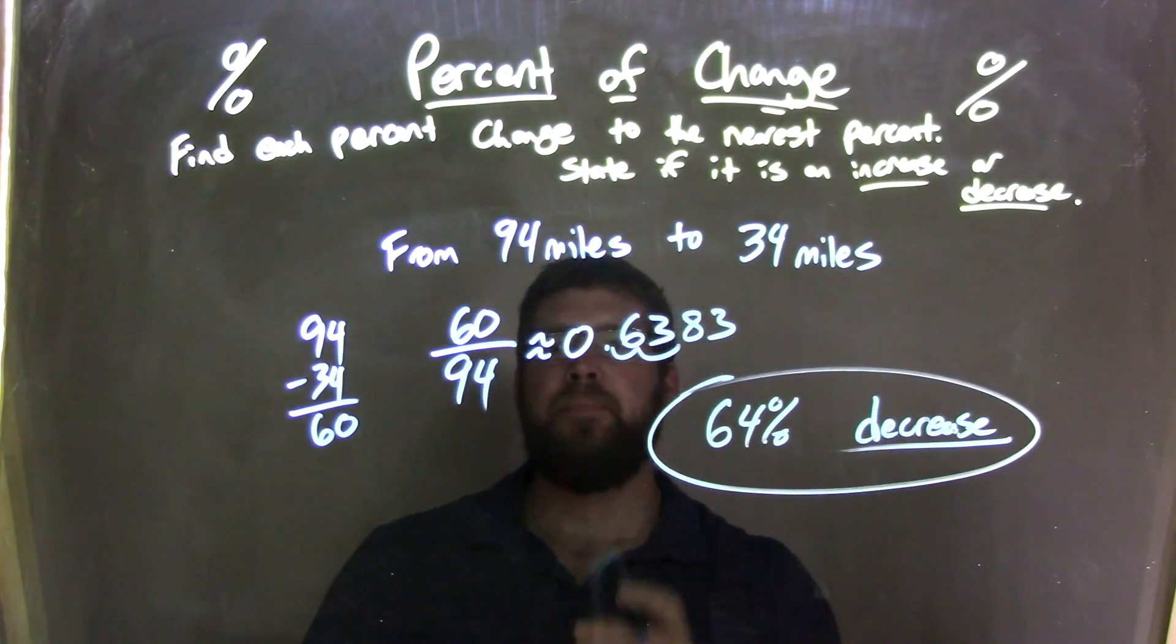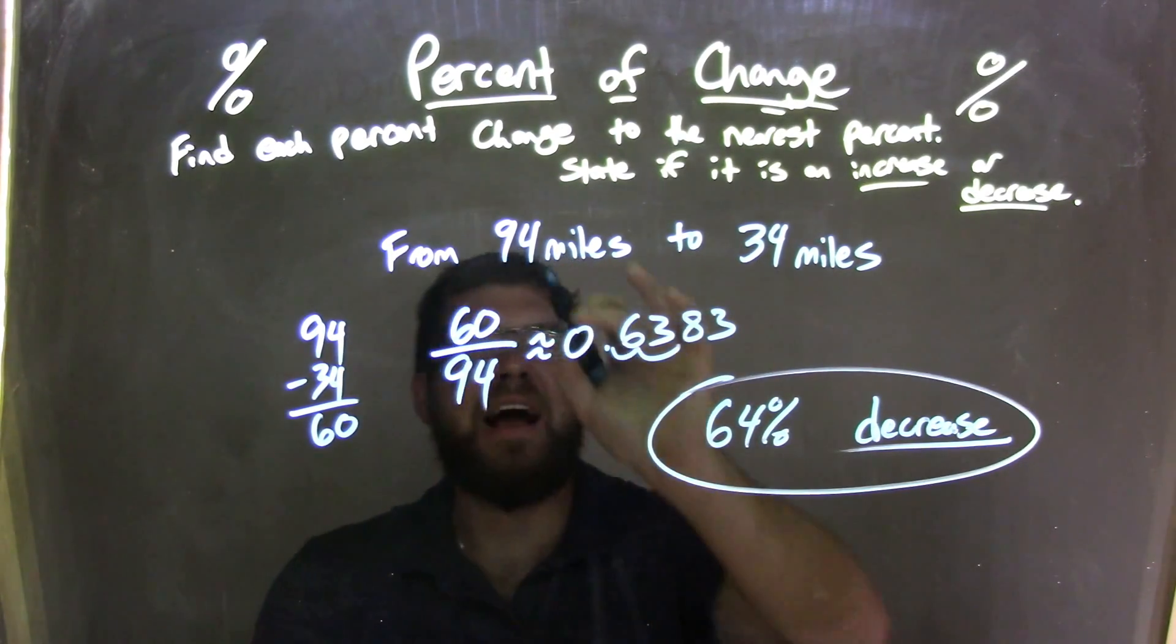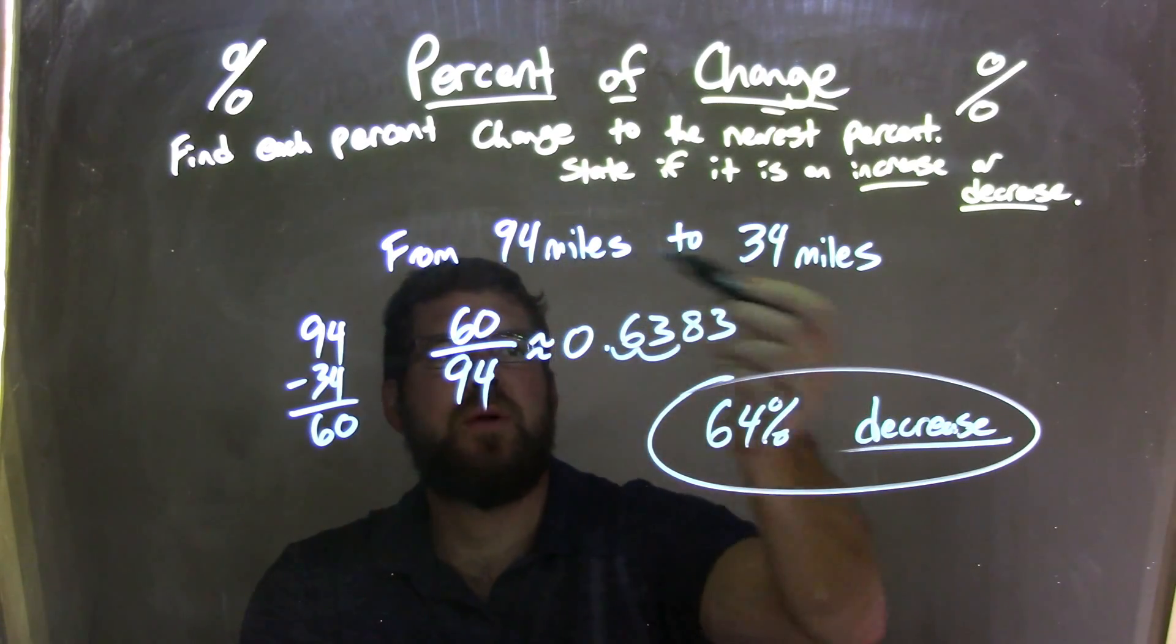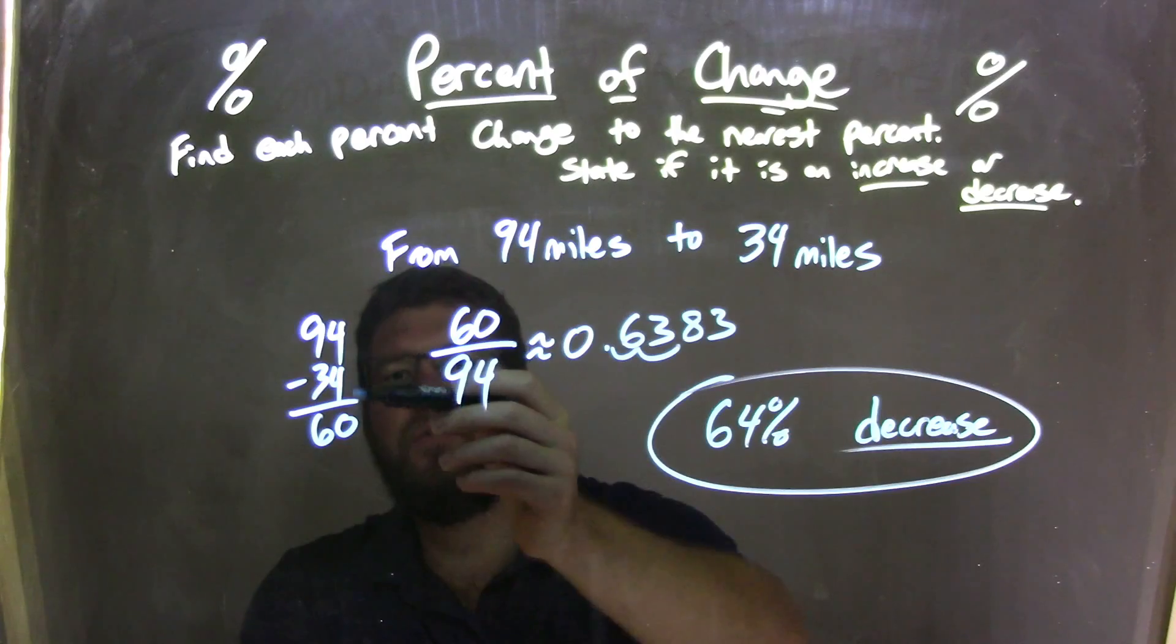Let's recap. We started from 94 miles to 34 miles. We recognized that was a decrease. Then we found the difference between these two. Difference between the large number subtracted by the lower number. 94 minus 34, which is 60.